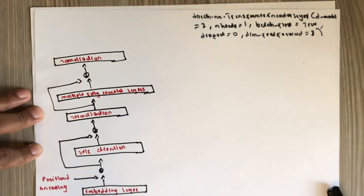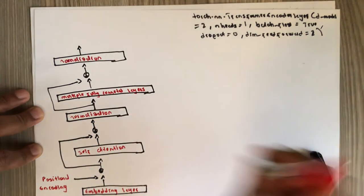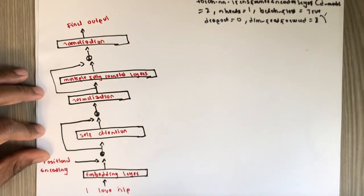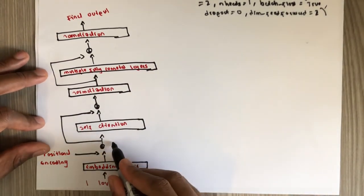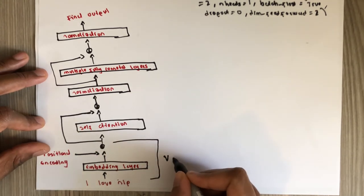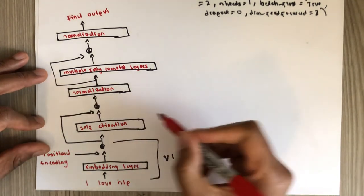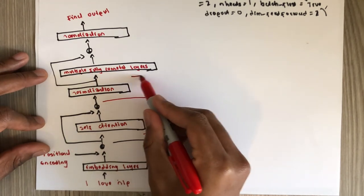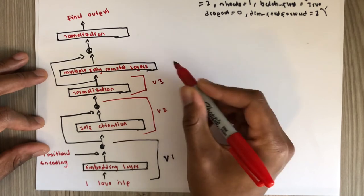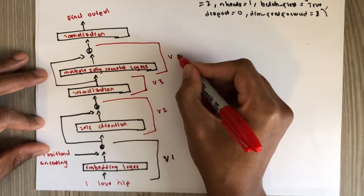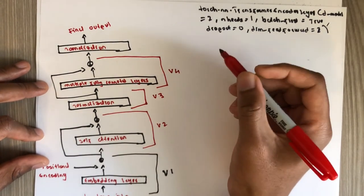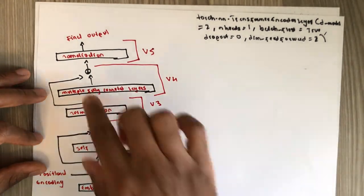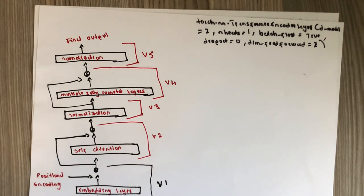The final normalization outputs the final output of the encoder. I plan to cover self-attention in video one, the addition and normalization in videos two and three, the multiple fully connected layers in video four, and the final normalization to get the final output in the last video. Thank you, see you in the next videos.